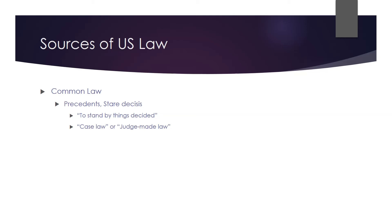There's a term called stare decisis, which means 'to stand by things decided.' Courts generally abide by previous rulings within their circuit. A state trial court will generally abide by rulings made by the state appeals court and the state supreme court. Everybody within that circuit abides by the same set of rulings. Courts are not going to disrupt the law any more than necessary.